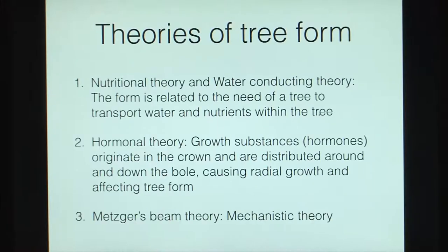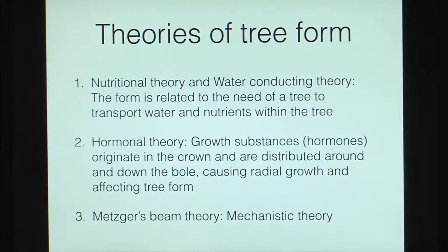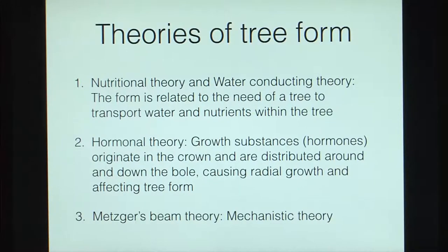We looked at the differences between form and taper: form tells you the shape of a figure, and taper tells you how quickly or slowly that shape goes towards a point. Then we looked at theories of tree form — the nutritional and water-conducting theory, the hormonal theory, and Metzger's beam theory. The nutritional theory relates form to a tree's need to transport water and nutrients. In the hormonal theory, hormones generated at the tip are distributed down and around the bole, causing differences in growth.